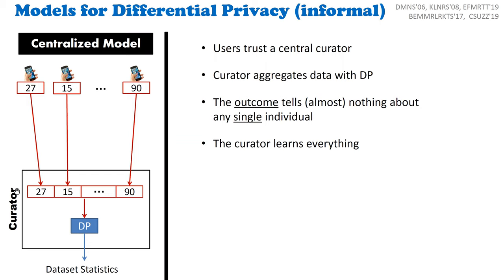The data curator aggregates this database using differential privacy — it runs a differentially private algorithm, obtains an outcome, and publicly releases it. By the definition, this outcome is safe for publication in the sense that every attacker who sees it learns basically nothing about the data of any single individual. The downside, however, is that the data curator learns everything, since all users give their data as-is to the curator.